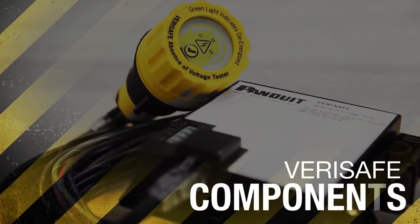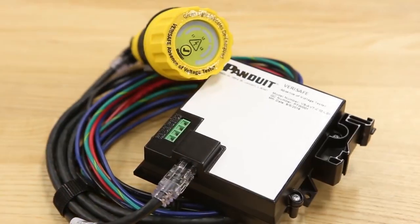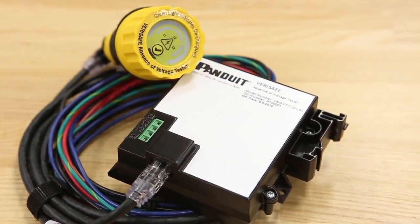The Varisafe AVT consists of three components: the indicator module, the isolation module, and the system cable.